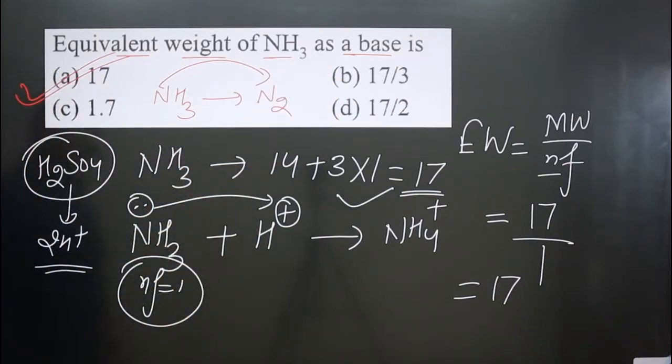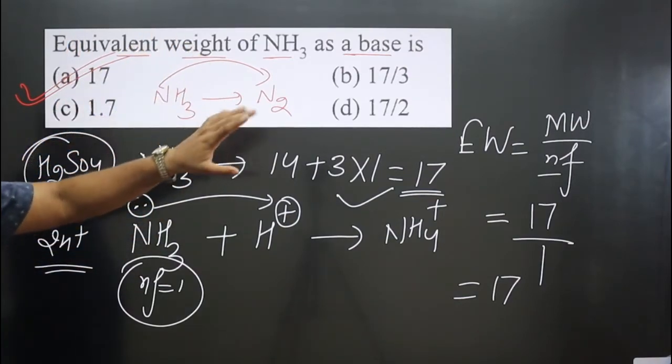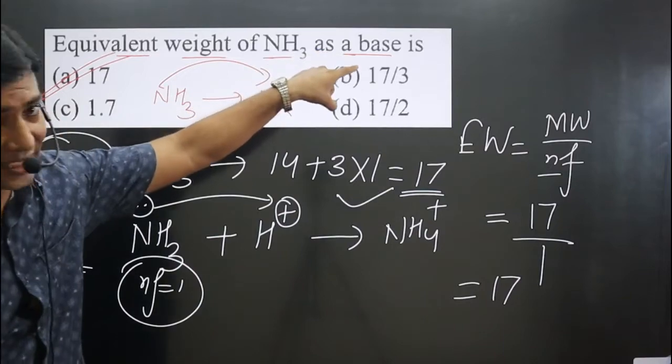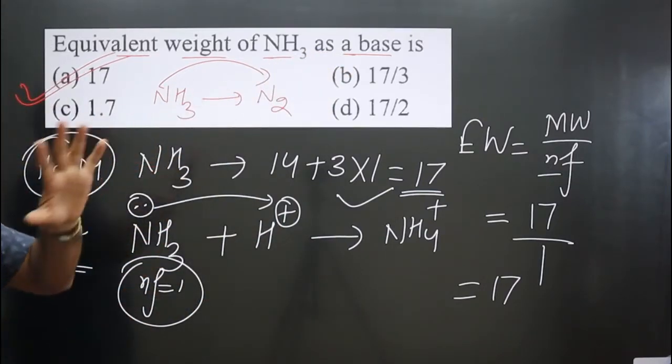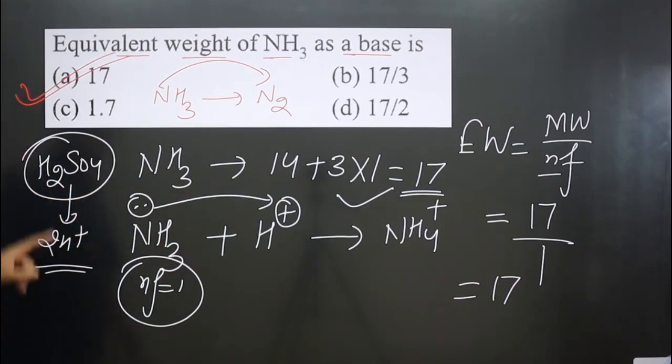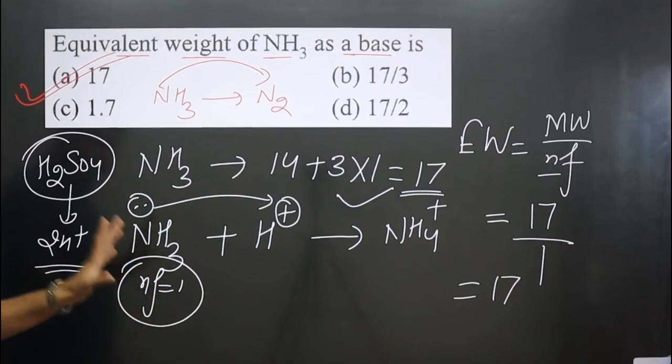So be very careful with the question statement - it says equivalent weight of ammonia as a base. You should not rush to write different chemical reactions, otherwise you may make a mistake. Option (a) is correct, and in this case the n factor value is 1.